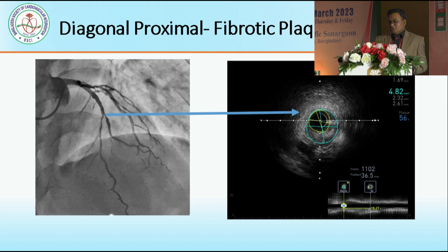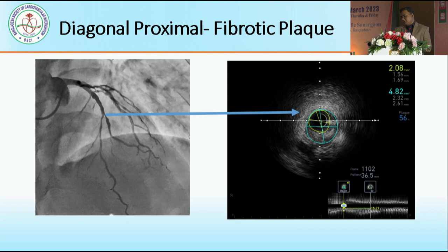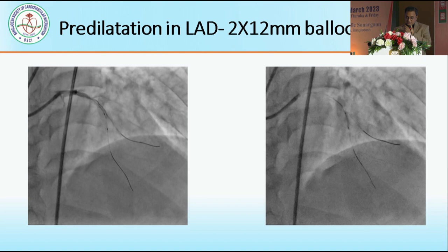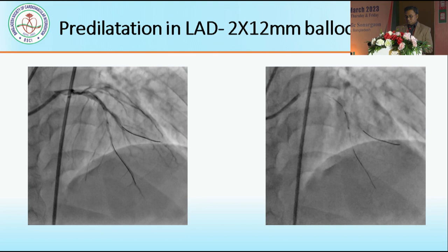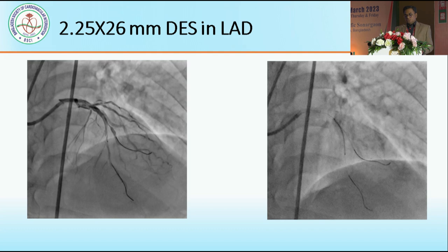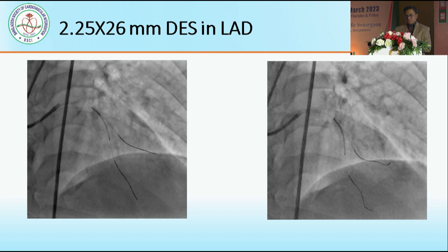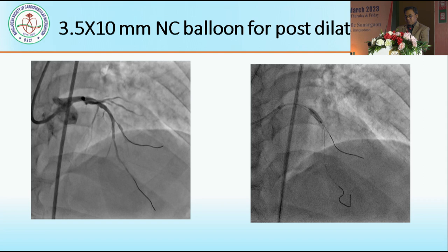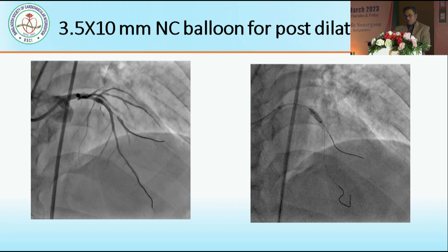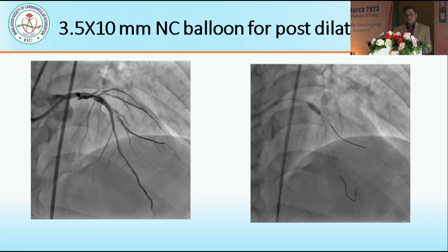We also did IVUS of the diagonal. The diagonal diameter is approximately 2.2 mm with 56% plaque burden. So, as planned, our single stent strategy involved pre-dilating the LAD with a 2 x 12 mm balloon, then placing a stent with IVUS-guided proximal and distal landing zones — a 2.25 x 26 mm drug-eluting stent in the LAD. Post-dilation was done with a 3.5 x 10 mm NC balloon, since by IVUS the proximal landing was almost 3.9 mm.